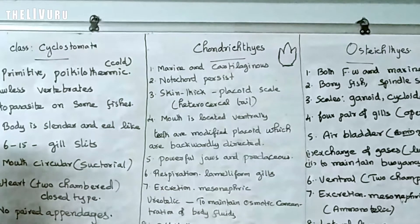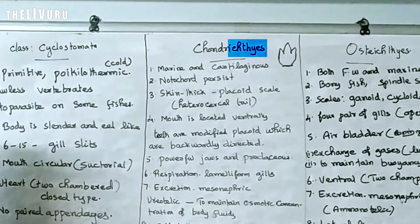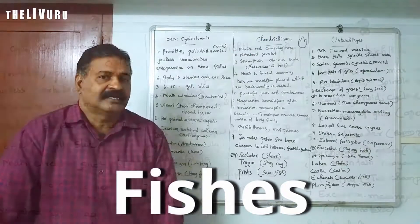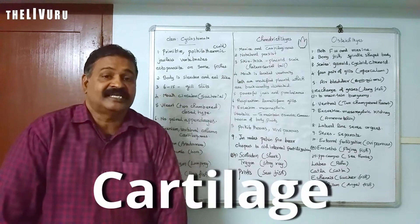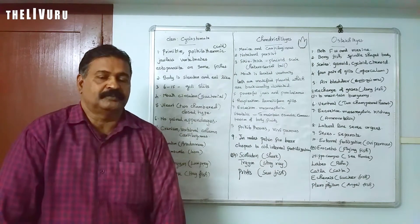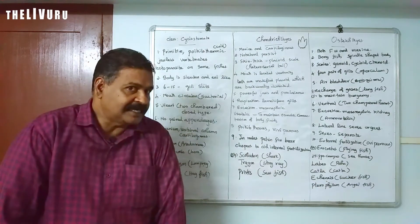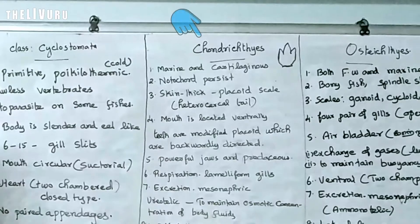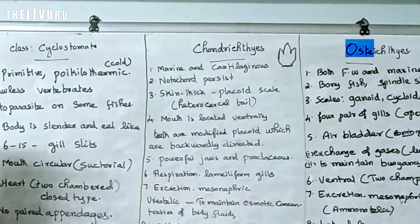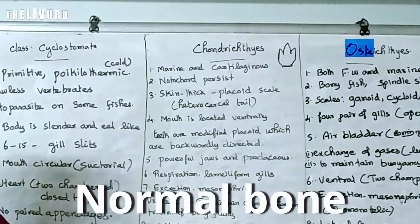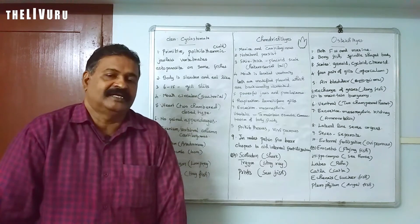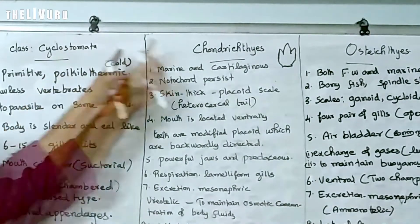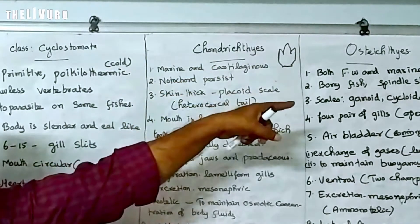Next, Chondrichthyes. 'Ichthyes' means fishes. 'Chondro' means cartilage bone — that is, cartilaginous fishes. Those come under Chondrichthyes. 'Osteo' means normal bones, that is bony fishes. So we will differentiate: Cyclostomata — circular-mouthed; Chondrichthyes — cartilaginous fishes; Osteichthyes — bony fishes.